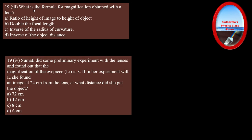Question three: what is the formula for magnification obtained with a lens? We know that magnification = Hi/Ho (height of image divided by height of object). Looking at all the options — double the focal length, inverse of radius of curvature, inverse of object distance — all the others are wrong. Only option A, the ratio of height of image to height of object, is correct. Easily one more mark.